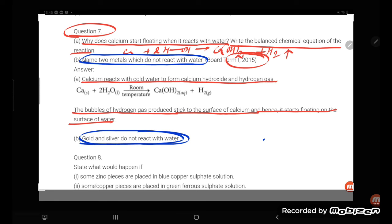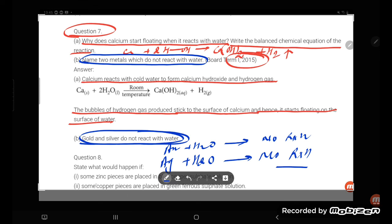What are the two metals? Gold and silver do not react with water. This is what - gold Au plus H₂O, because they are below the hydrogen, no reaction. They are inert metals. And silver Ag plus H₂O is also no reaction. Why? Because the reason behind this is they are inert metals.